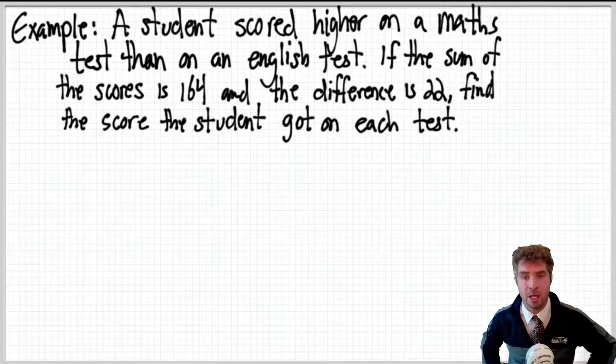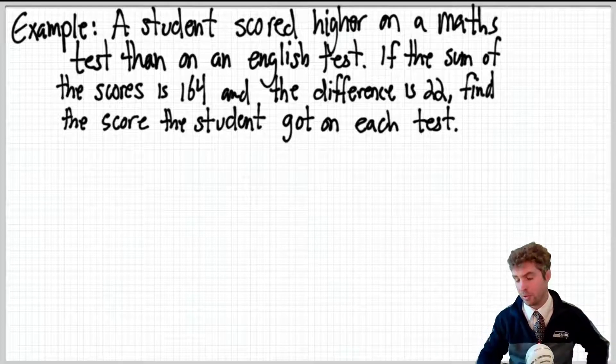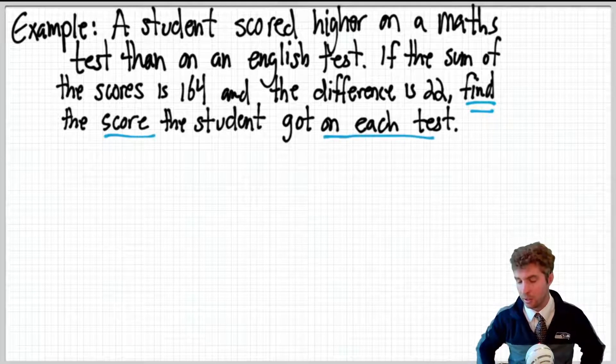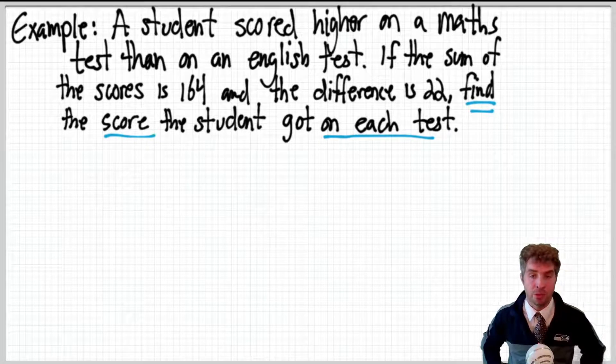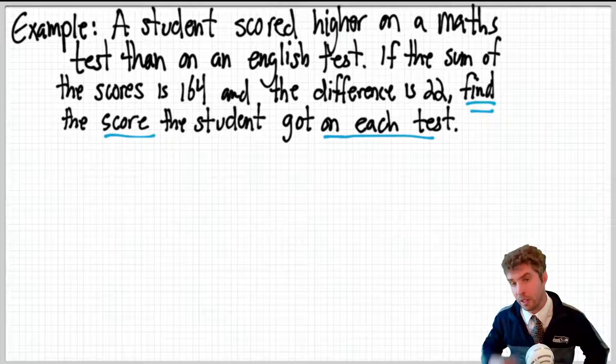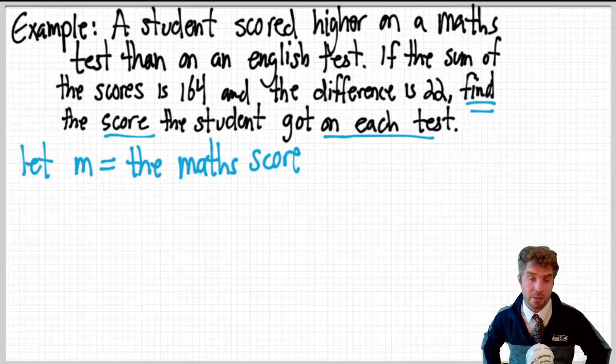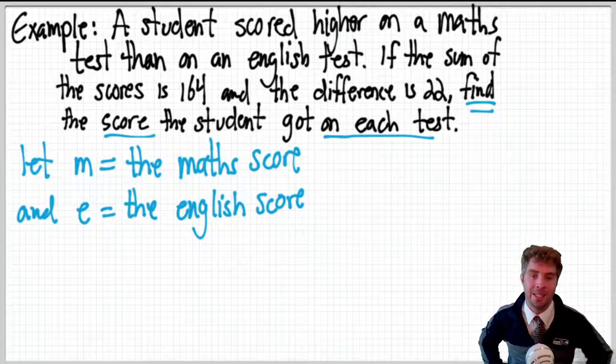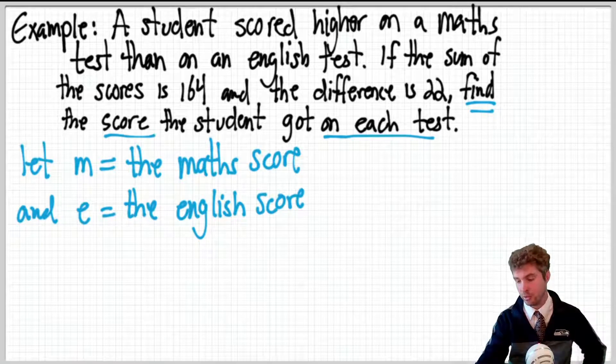So, the first step is to define the unknown quantities, the thing that you're trying to find. The thing you're trying to work out as variables or pronumerals. So, it says find the scores, again, that should say scores, that the student got on each test. We need to define those as pronumerals, so with letters. We can use whatever letters we want. X and Y are the common ones, or you can use letters that represent, that kind of stand for the thing that we're looking for. So, you could use M for the maths test, the maths score, and E for the English score. So we say, let M equal the maths score and E equal the English score. That step is done. We've got two different quantities, one for each of the things we're trying to find.